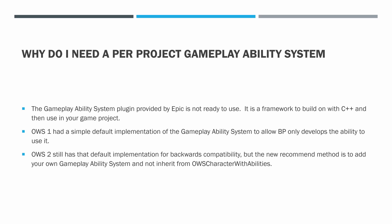Why do I need a per-project GameplayAbility System? The GameplayAbility System plugin provided by Epic is not ready to use — it is a framework to build on with C++ and then use in your game project. OWS1 had a simple default implementation to allow Blueprint-only developers to use it. OWS2 has that default implementation for backwards compatibility, but the new recommended method is to add your own GameplayAbility System and not inherit from OWS Character with Abilities. So that's exactly what we're going to do in the Hubworld MMO Example Project.